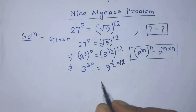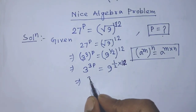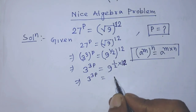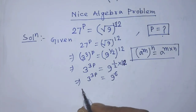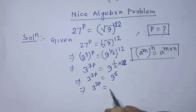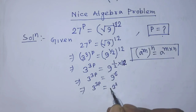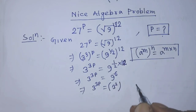Then it will be 3 to the power 3p is equal to 9 to the power 6. After that, it will be 3 to the power 3p is equal to 3 to the power 2, whole to the power 6.